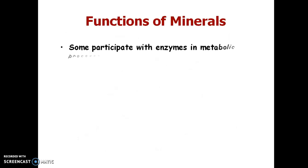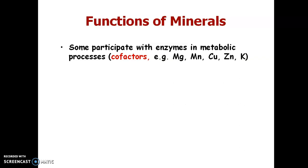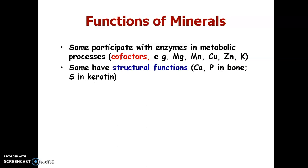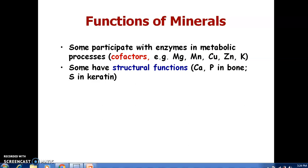Some minerals participate with enzymes in metabolic processes — that is, as cofactors. For example, magnesium, manganese, copper, zinc and potassium. These minerals participate with other enzymes to carry out metabolic processes in our body. Some have structural functions — that is calcium and phosphorus in the bone. For the formation of bone, calcium and phosphorus are very important minerals.